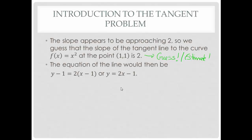If you look at the graph, if you graph both f(x) = x² and y = 2x - 1 on the same screen, you should see that that is in fact the tangent line to the curve at (1,1).